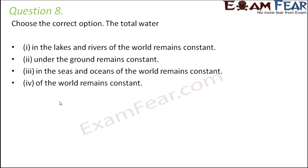Whenever water is wasted, it goes somewhere else. For example, if you leave a tap open, that water flows through the basin into pipelines and eventually reaches the ground or drainage canals. Whether water gets polluted or wasted, it remains somewhere within the world. Groundwater specifically does not remain constant because we utilize it faster than it gets refilled.